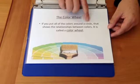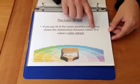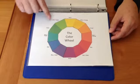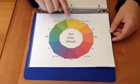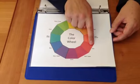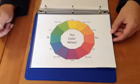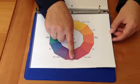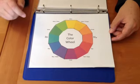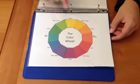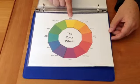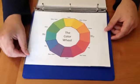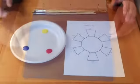The color wheel — if you put all of the colors around a circle that shows the relationships between colors, it is called a color wheel. We have the primary colors yellow, red, and blue, and then we have the secondary colors green, orange, and violet. When we mix a primary and secondary we get intermediate colors — for example, mixing yellow with green gives us yellow-green.